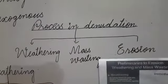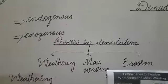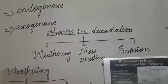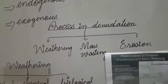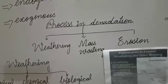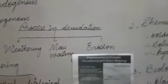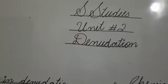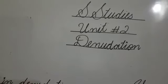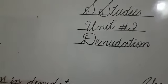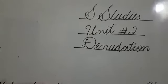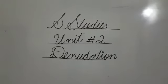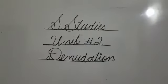Now let's start a reading. Endogenous is a process that takes place under the earth surface, and exogenous is a process that takes place on the earth surface. Denudation is a process involving exogenous and endogenous processes, and these involve the breakdown of rocks into smaller parts. Denudation is a mixture of two processes which break down the rocks into smaller fragments.